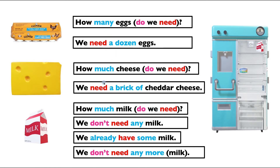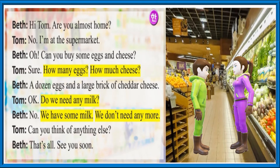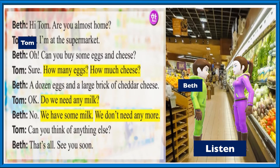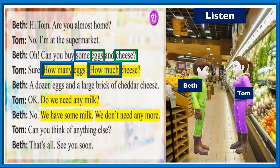Eggs has an 's' because we can count the eggs — one, two, three, four — but cheese we can't count. We will discuss that in a moment. How much milk do we need? We don't need any milk — in the refrigerator we already have some milk, so we don't need any more. Words like 'any,' 'a dozen' give quantities. In this dialogue between Beth and Tom, 'some' is a quantifier. The question 'how much' and 'how many' asks you to quantify — a dozen means 12, and eggs is the noun.